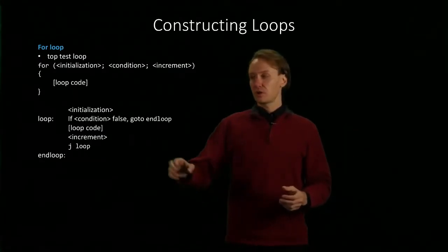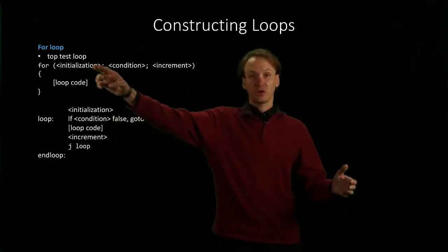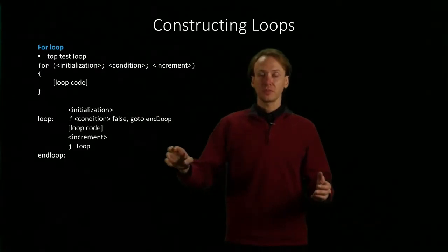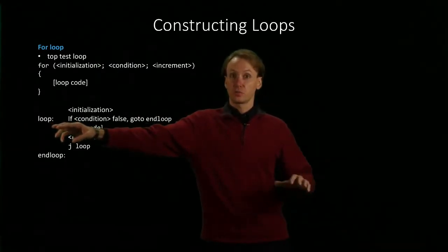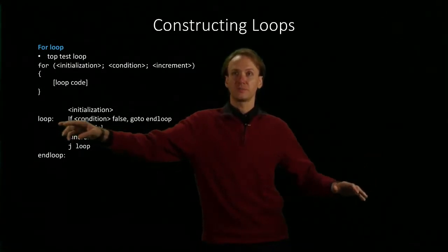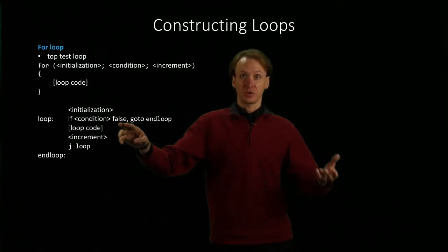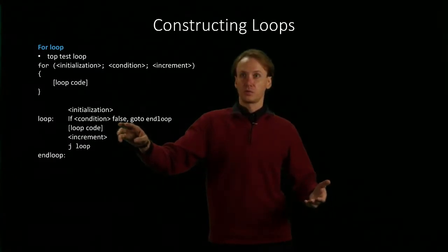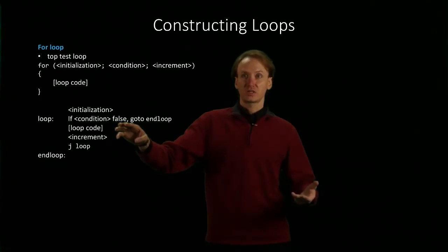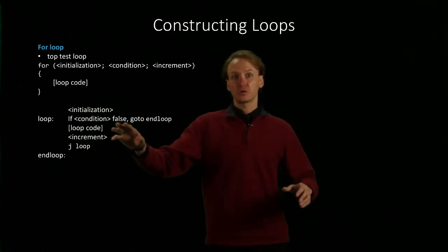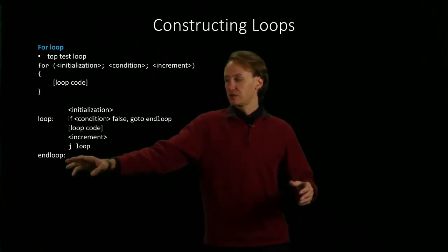This time we start by initializing our registers to whatever we need them to be, just like we would with our for loop. Our loop label comes after that initialization. We only want to run the initialization once, but we still want to be able to run the condition multiple times. So we'll have our loop label, and like the while loop, we check to see if our condition is false. If so, we don't run the loop body—we just skip down to the end of the loop.